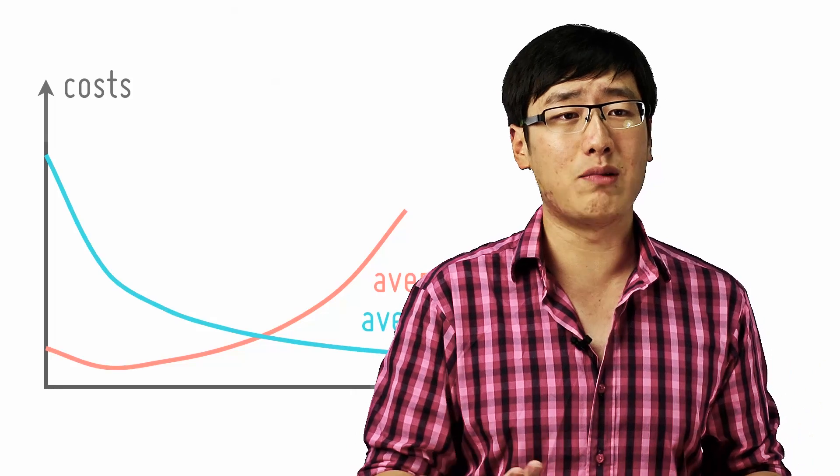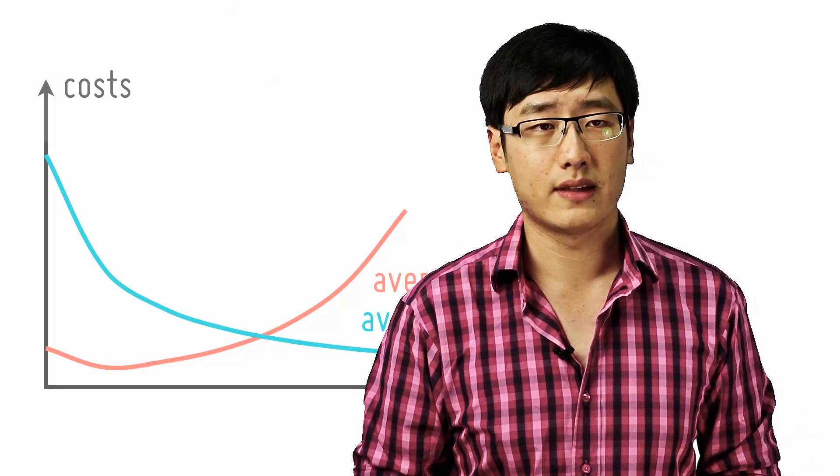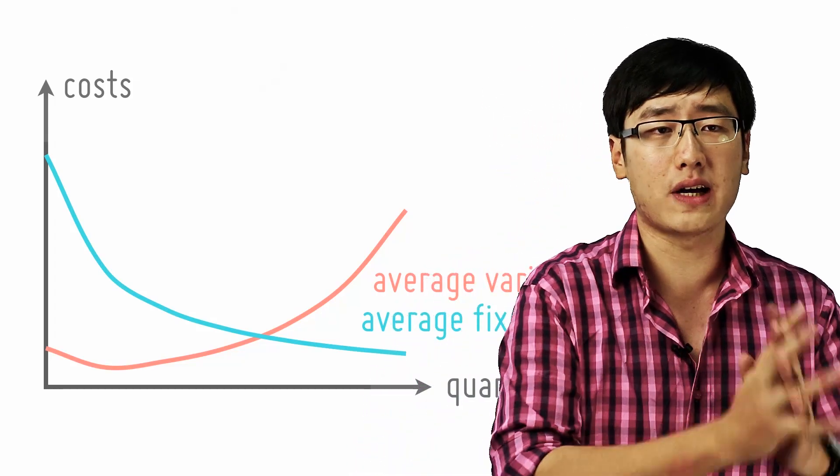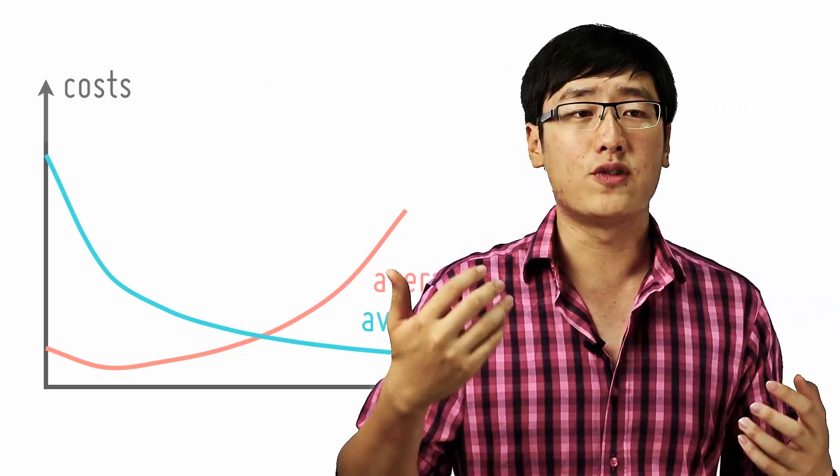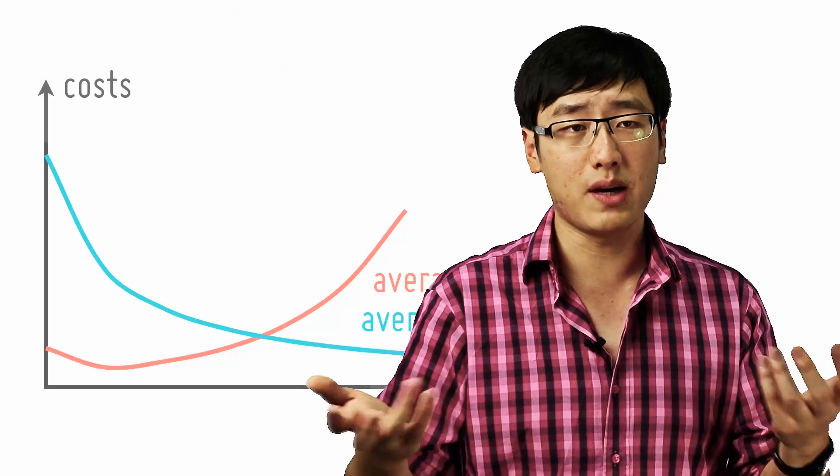the average variable cost again reflects your law of diminishing returns. Why? Because as the average product of your workers increases before diminishing returns set in, the average variable cost decreases. Think about it this way.